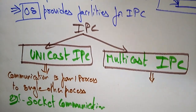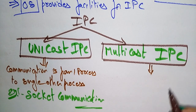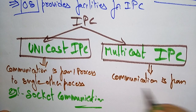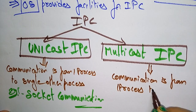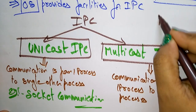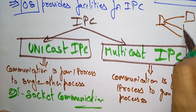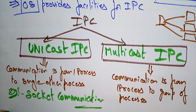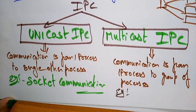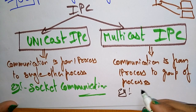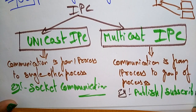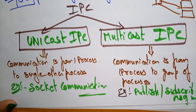Coming to multicast: multicast inter-process communication means communication is from one process to a group of processes. One process communicates with multiple processes — that is multicast inter-process communication. An example of multicast inter-process communication is the publish-subscribe message model.